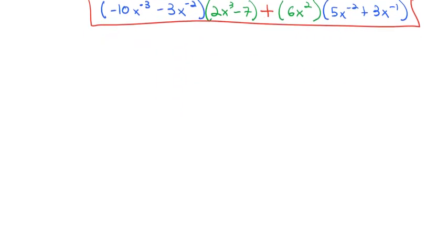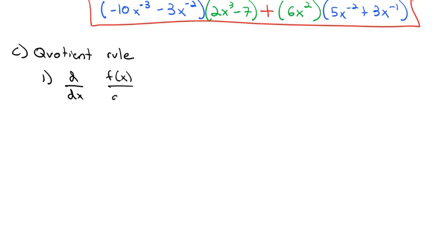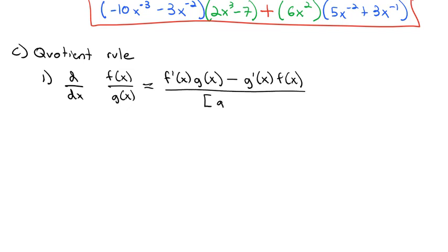Similar to the product rule is the quotient rule. It has two tweaks that make it different, but it's very similar. If I'm taking the derivative of two things that are divided — f of x divided by g of x — be careful: this is not f prime divided by g prime. We can't just divide the derivatives. Instead, we take the derivative of the first times the second, and because this is division, we subtract the derivative of the second times the first. The big difference here is we have to divide by the denominator squared. We end up with this squared denominator in the denominator.